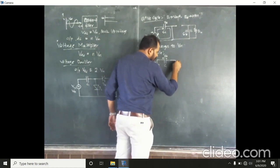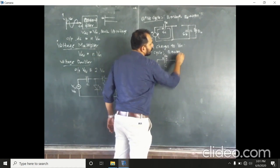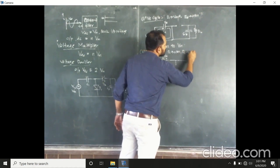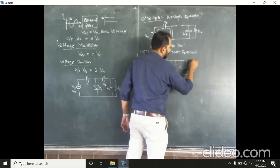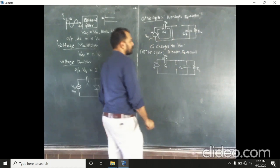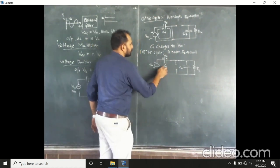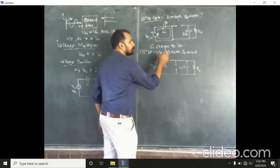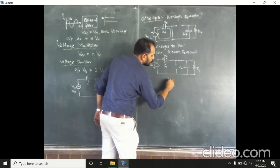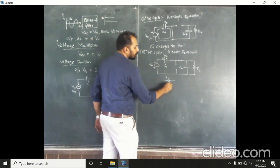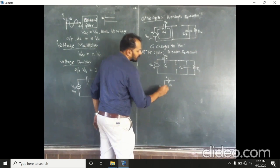D1 has been replaced by an open circuit, and D2 is replaced by a short circuit. Then we are having capacitor C2 here, and the load resistance RL is here. We are considering the maximum voltage Vm from the input source. C1 already has voltage Vm across it — that is, the capacitor acts like a voltage source with Vm across it, positive and negative.